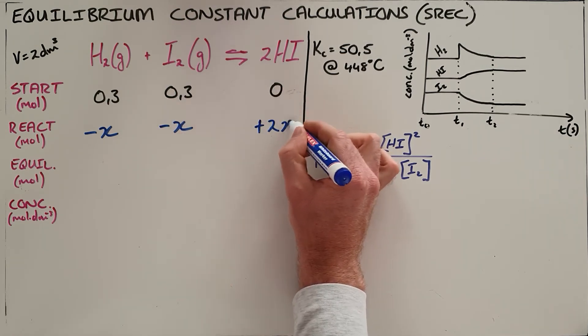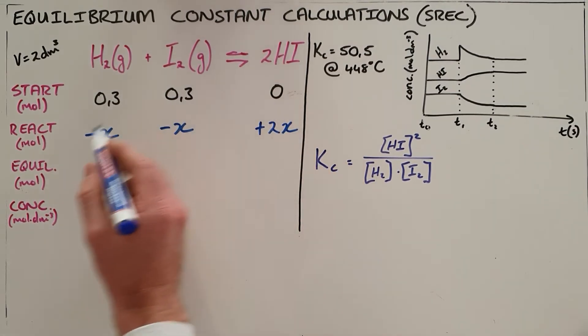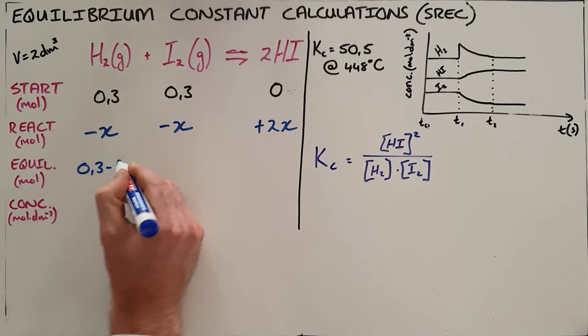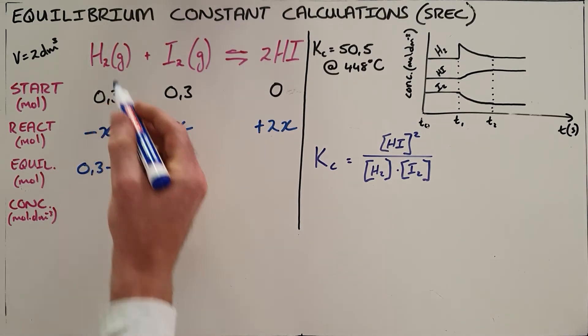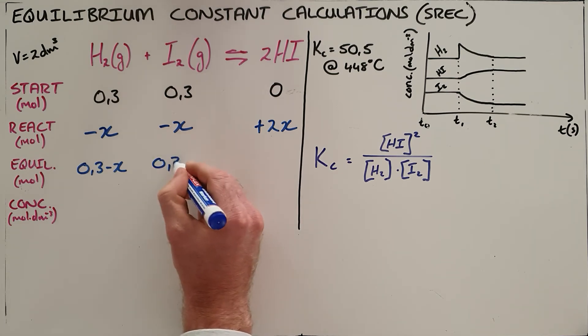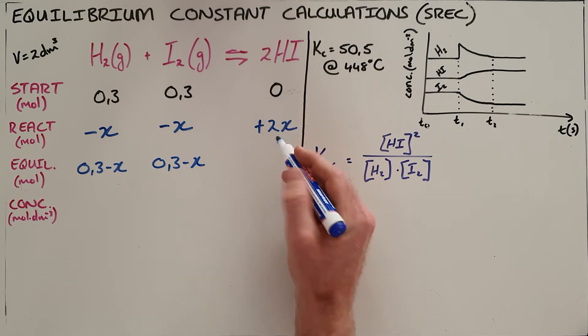At equilibrium, we have 0.3 minus X moles of hydrogen—what we started with minus what reacted. The same for iodine. For hydrogen iodide, we started with nothing and formed 2X moles.